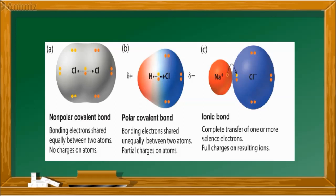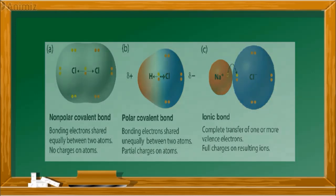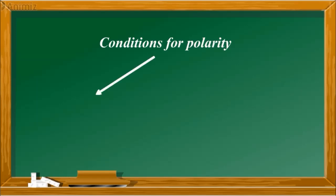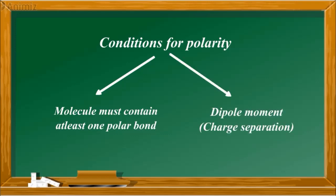A molecule is said to be a polar molecule if it satisfies the following two conditions. First, the molecule must contain one or more polar bonds. Now you know which bonds are said to be polar. The difference in electronegativity values of the elements forming the bond should be between 0.4 to 1.8. And the second condition is the polar bonds must be so directed that there are separate centers of positive and negative charges in the molecule.